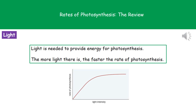Thinking about light first: light is needed to provide the energy for photosynthesis. The more light there is, the faster the rate of photosynthesis. You'll see a graph where up to a certain point, light intensity is the limiting factor — as we increase the light intensity, the rate of photosynthesis also increases. But as the graph starts to level off, even though we're increasing the light intensity, that tells us something else is now limiting the rate of photosynthesis.